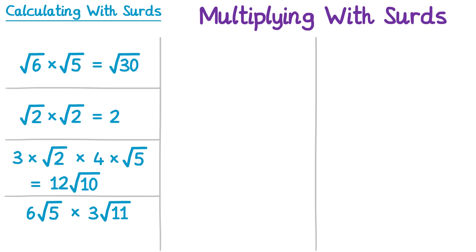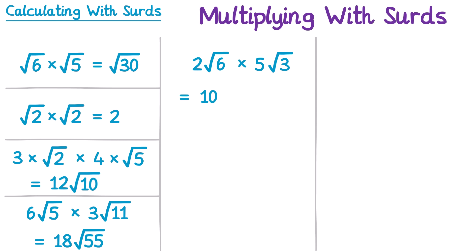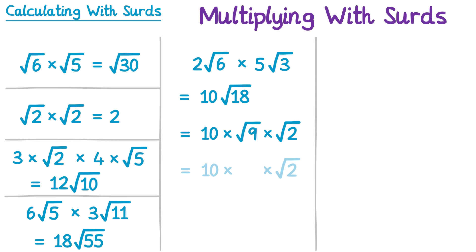Let's try another: 6 root 5 times 3 root 11. Start by multiplying 6 and 3 to get 18, then the square root of 5 times the square root of 11 is the square root of 55, giving 18 root 55. Sometimes you might need more simplification — for example, 2 root 6 times 5 root 3: 2 times 5 gives 10, and the square root of 6 times the square root of 3 is the square root of 18. Square root 18 simplifies to the square root of 9 times the square root of 2, and the square root of 9 is 3, so 10 times 3 gives 30 root 2.